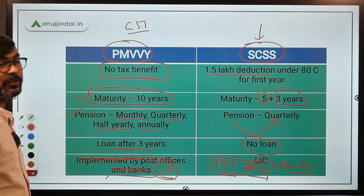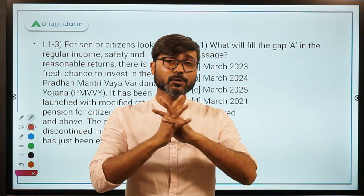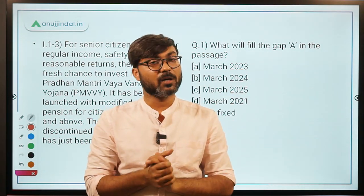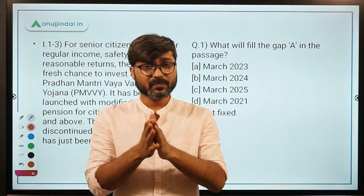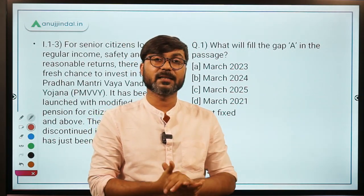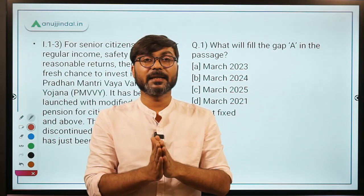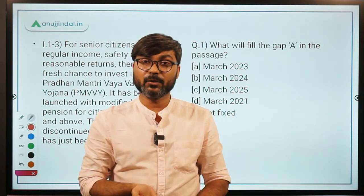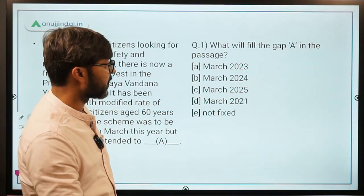To summarize: an old age person who has, say, ten lakh rupees fears that future interest rates will fall and reduce their returns. The Government of India steps in through Pradhan Mantri Vaya Vandana Yojana, saying there's no need to worry — invest this money with LIC for 10 years and you will receive a fixed rate of return regardless of market conditions. Minimum pension is 1000 rupees, maximum is 9250 rupees, maximum investment is 15 lakh rupees, and it is implemented through LIC under the Ministry of Finance.